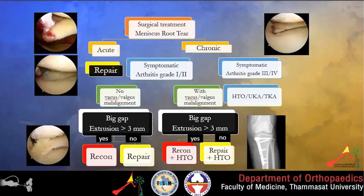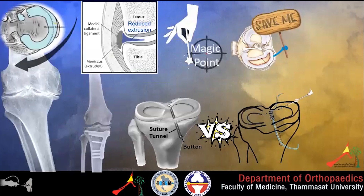Take-home message: the algorithm for meniscus root tear — repair is indicated in all acute tears. In chronic tears, assess the severity of associated arthritis. In severe arthritis, recommend HTO, UKA, or total knee replacement alone. In mild to moderate arthritis, perform repair or reconstruction depending on the extent of extrusion and gap, with or without HTO. Root tear is equivalent to total meniscectomy and if left untreated will lead to rapid progression of osteoarthritis. The 'tu magic point' can help create space to work in a tight joint. Meniscus extrusion must be reduced to help prevent progression to osteoarthritis. I prefer soft anchor for root repair because it has less bungee effect and the fixation point is closer to the insertion site. Do not repair the root alone if significant varus deviation exists — please save the meniscus.